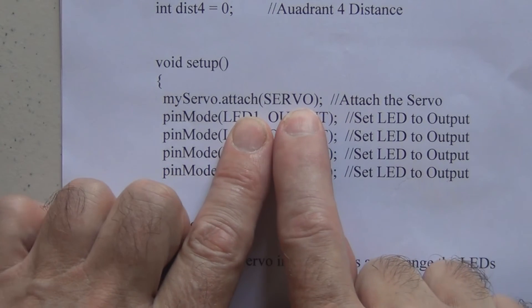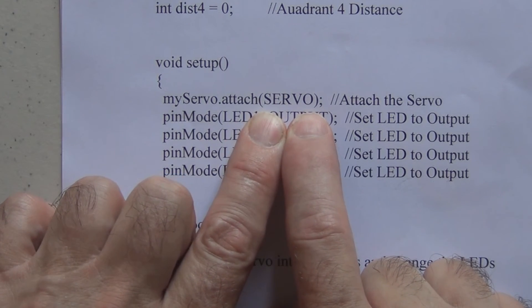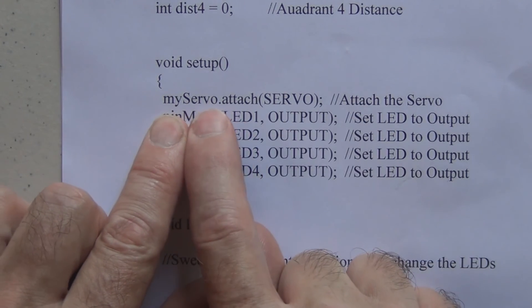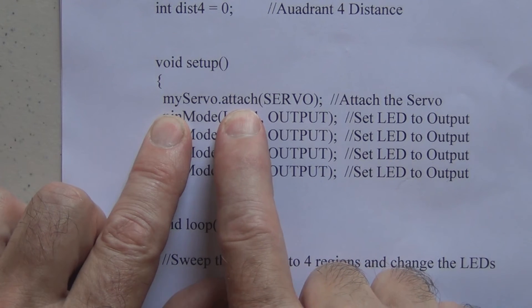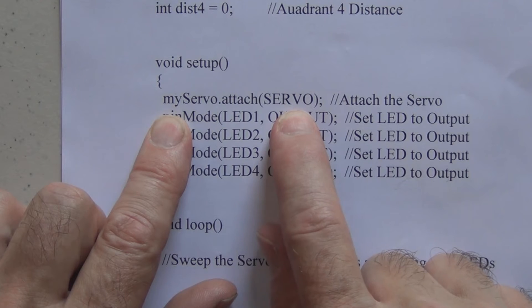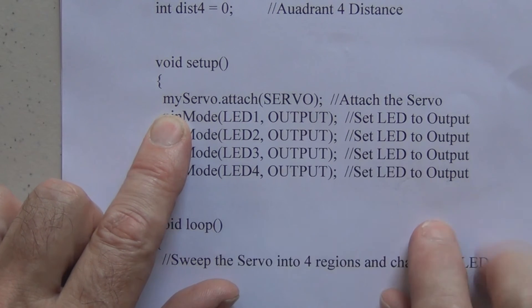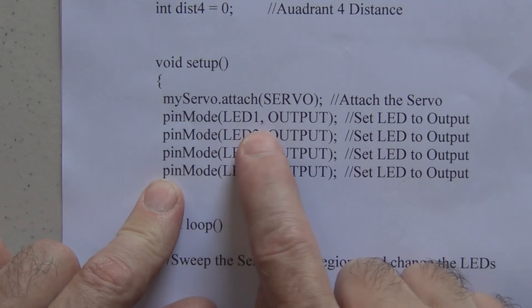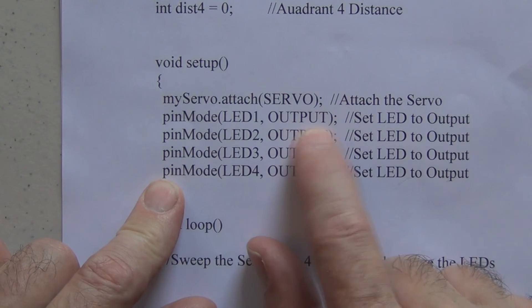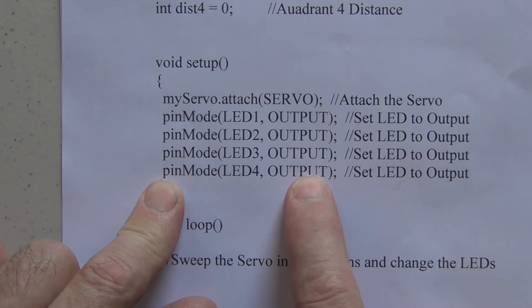And here we are attaching the servo. We defined servo to pin 9, and we are using myServo.attach, and that is defining that we are controlling the servo using pin 9. And here we are defining the LEDs as outputs using pinMode LED 1, 2, 3, and 4 outputs.